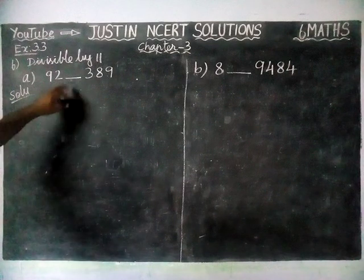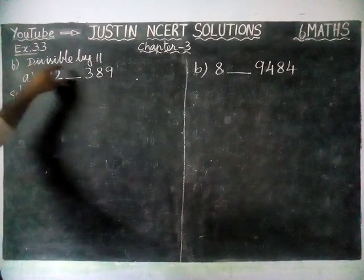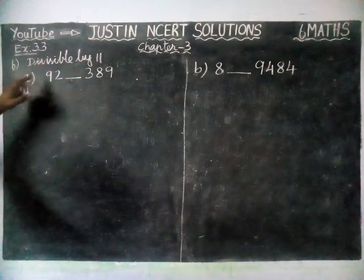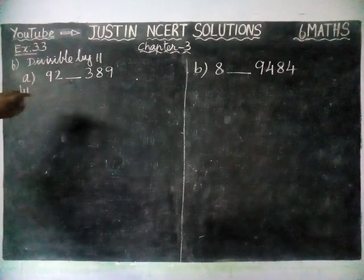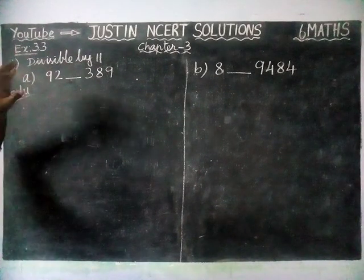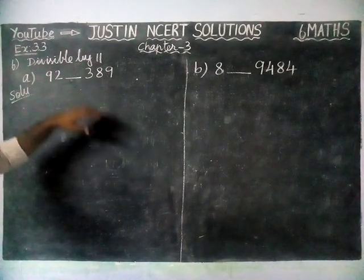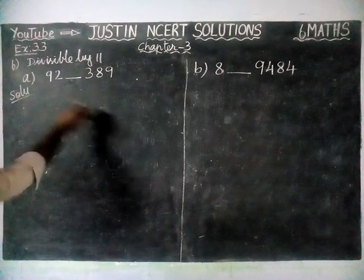We have to fill a number in this blank so that the number formed is divisible by 11. According to the divisibility rule, if the sum of its odd-position digits and the sum of its even-position digits have a difference of 0 or 11, the number is divisible by 11.